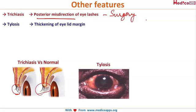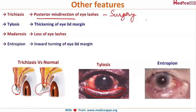Tylosis presents with a thickened lid margin. Madarosis is loss of eyelashes, and entropion is inward turning of the eyelid margin. All of these are other features of trachoma.